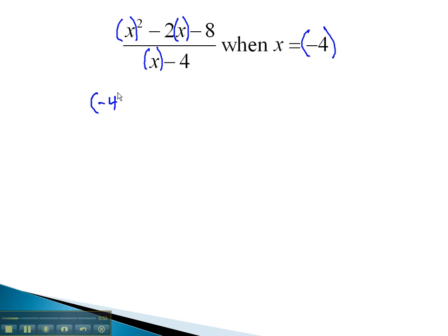x squared becomes negative 4 squared, minus 2x, which is now negative 4, minus 8, over x, which is negative 4, minus 4.